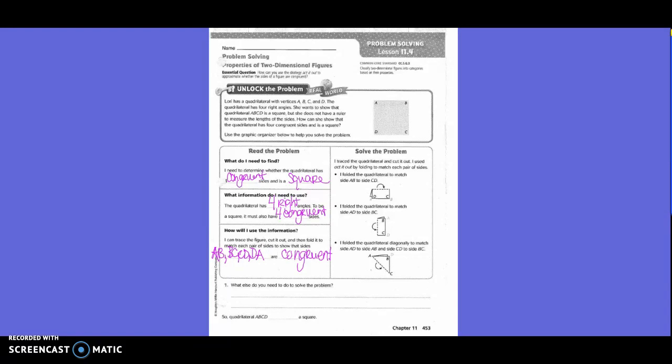Solve the problem. I trace the quadrilateral and cut it out. I act it out by folding to match each pair of sides. I folded the quadrilateral to match side AB to side CD. So basically, they took this side and they flipped it down to match up DC.